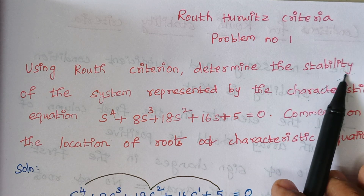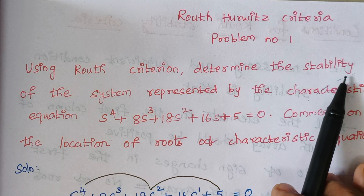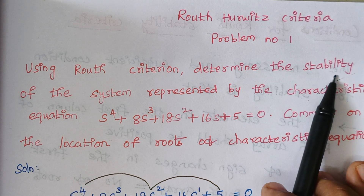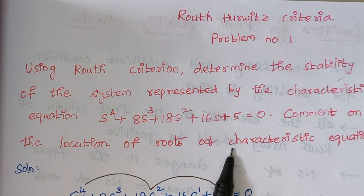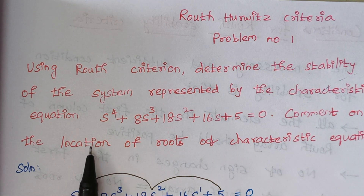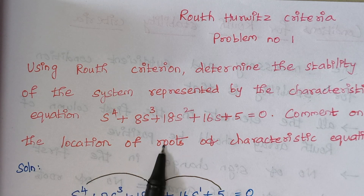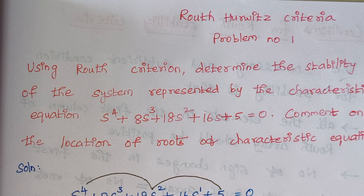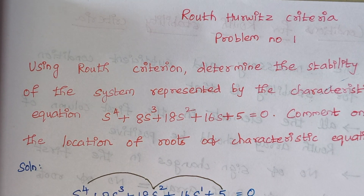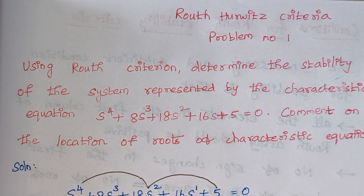Checking stability means we have to tell whether the system is stable or unstable. The next thing is we have to comment on the location of the roots — we have to tell where the roots are located, either on the right half of the S-plane or on the left half of the S-plane.